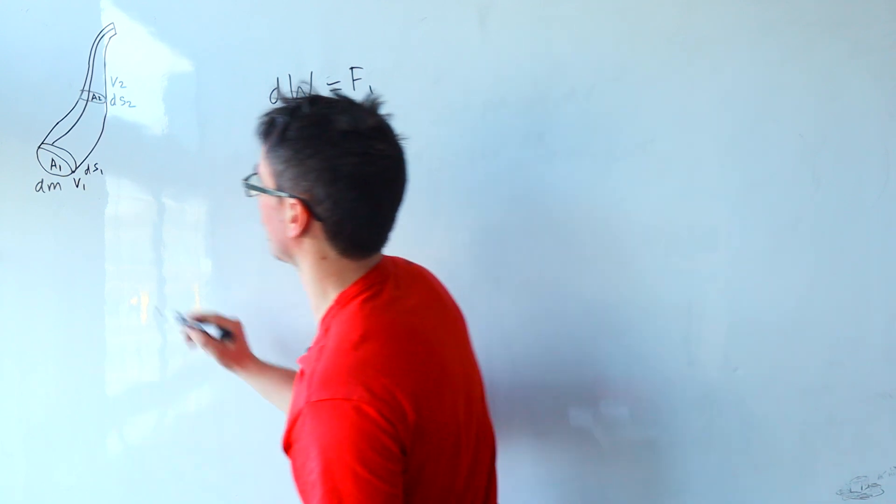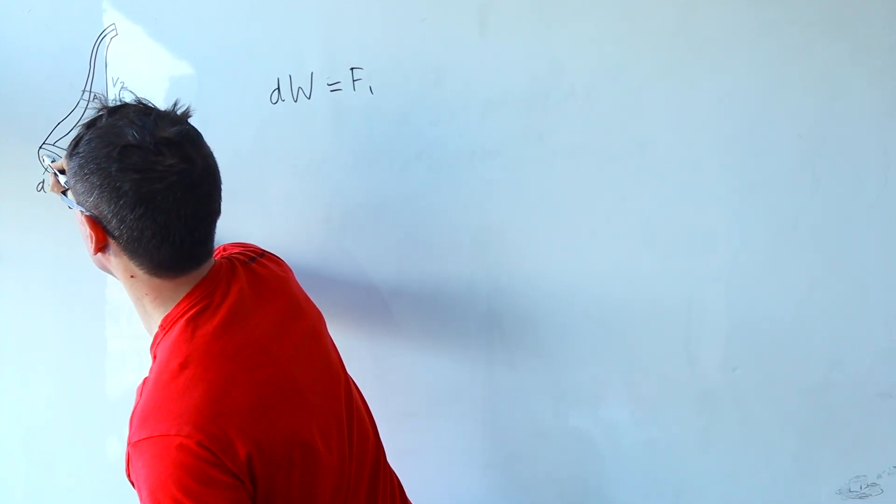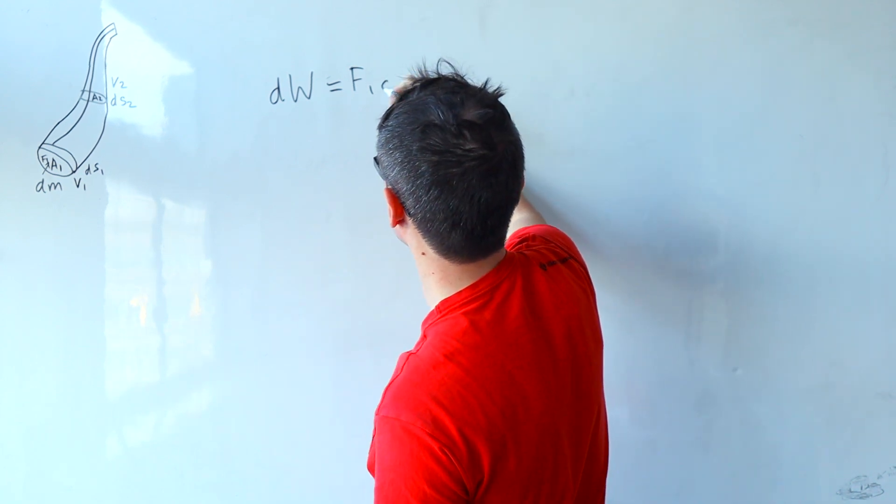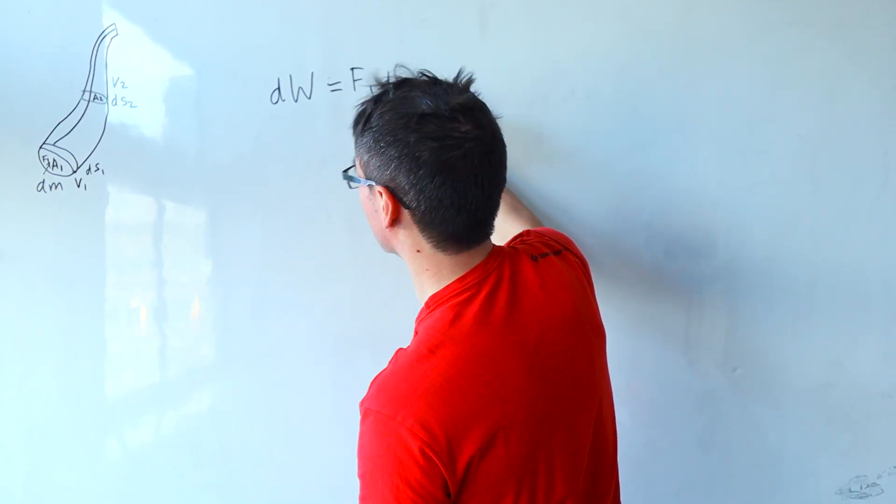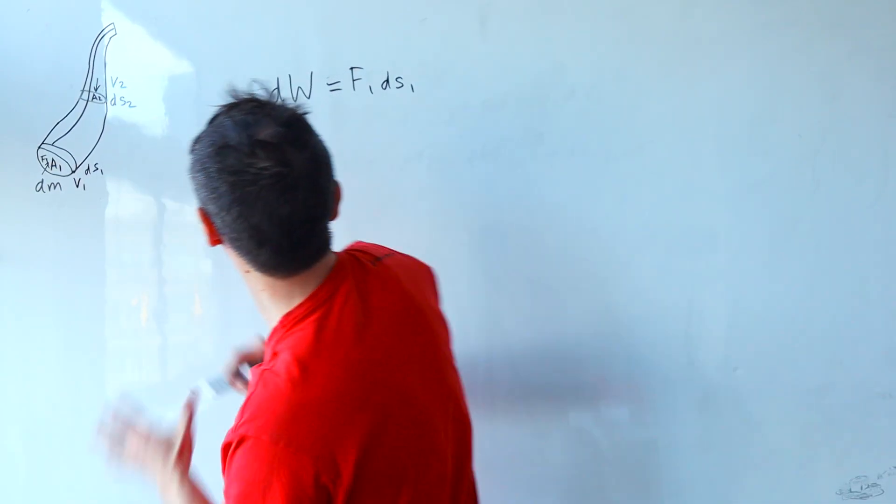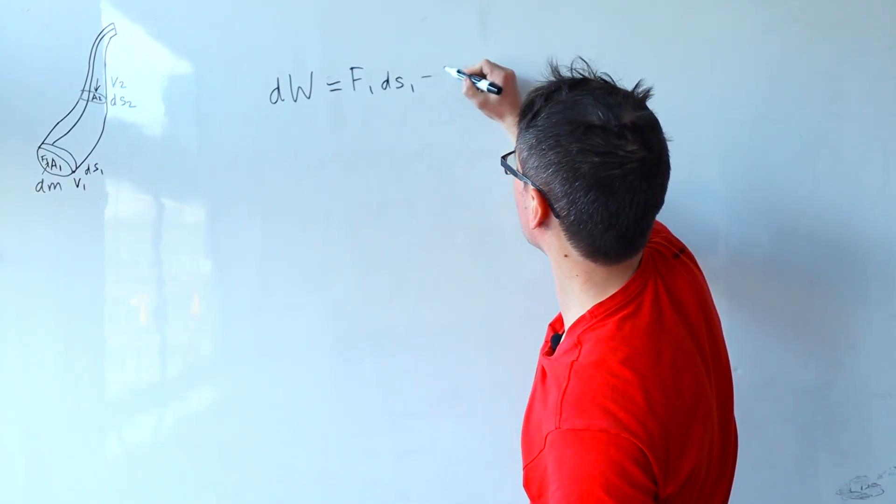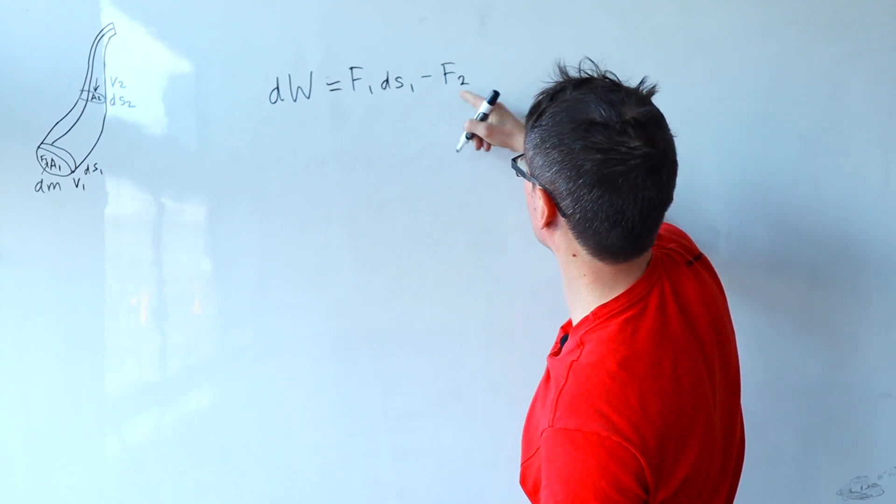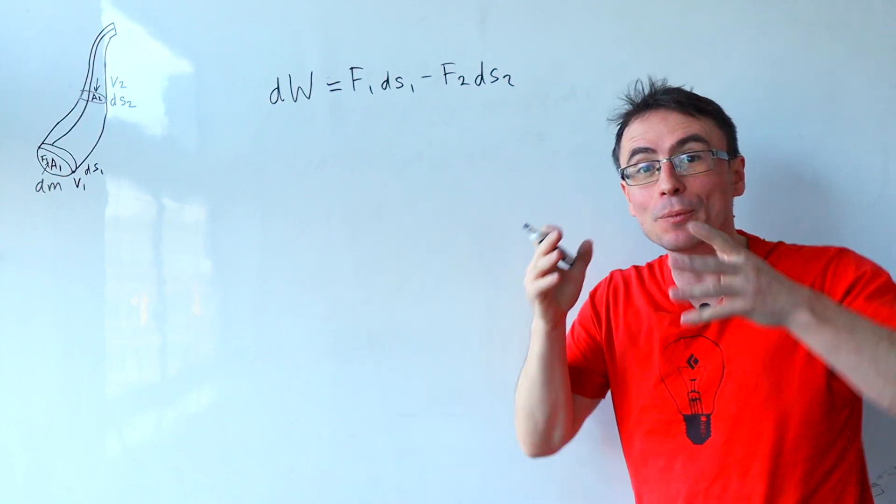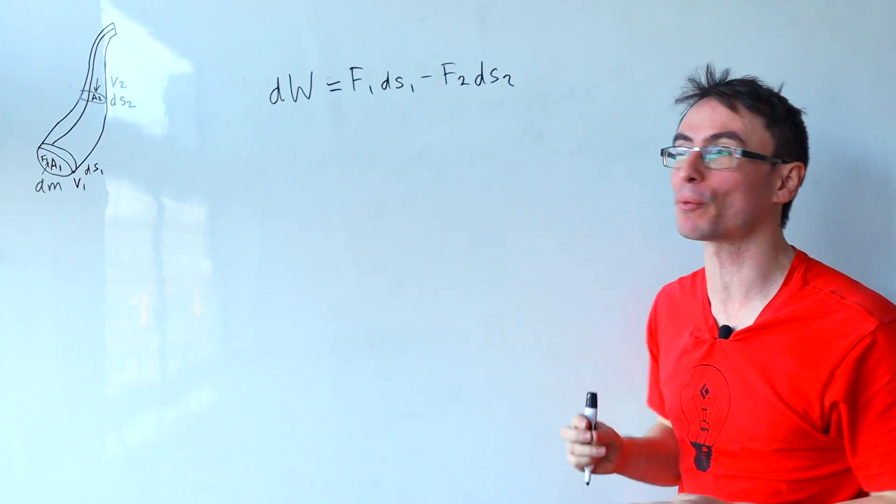So I'm going to say that there's a force due to pressure this way, F1, and we're going to multiply this by a small element ds1. There will be another force acting in the opposite direction. So let's just take that away. I'm going to call this F2 ds2. And we can express these in terms of pressure.